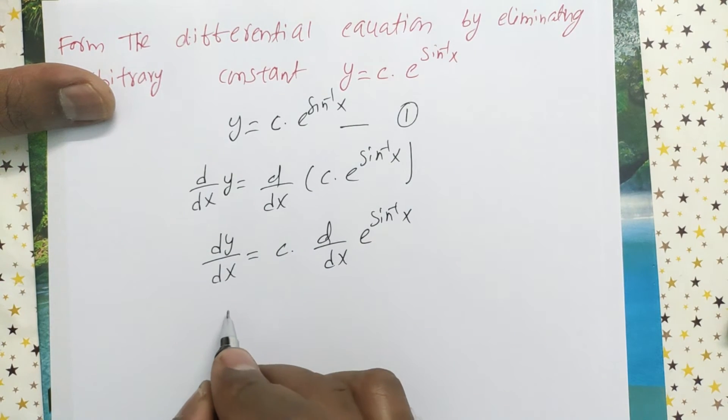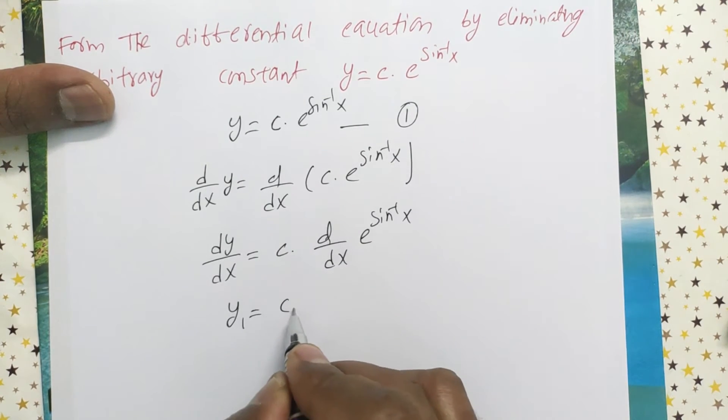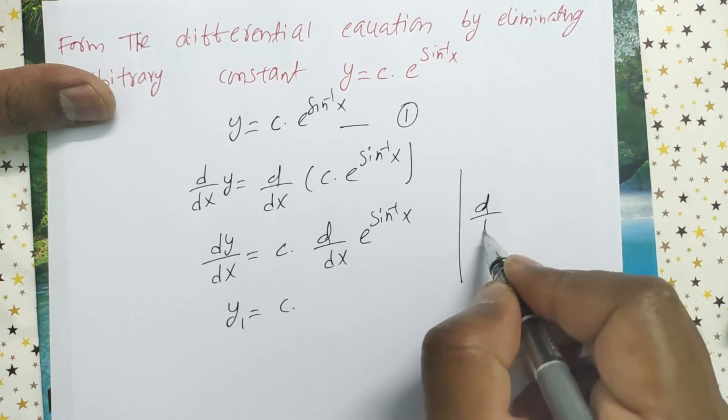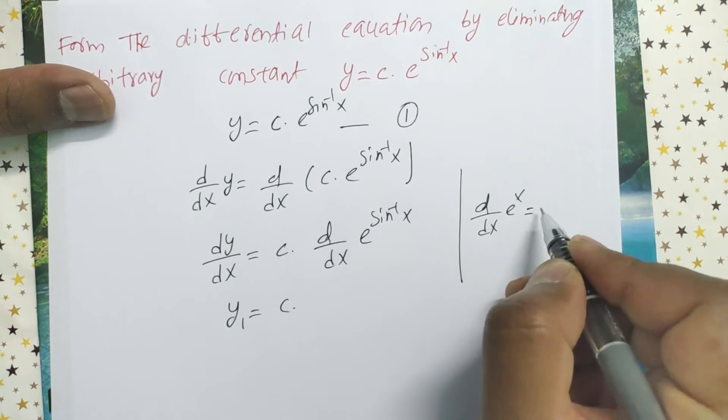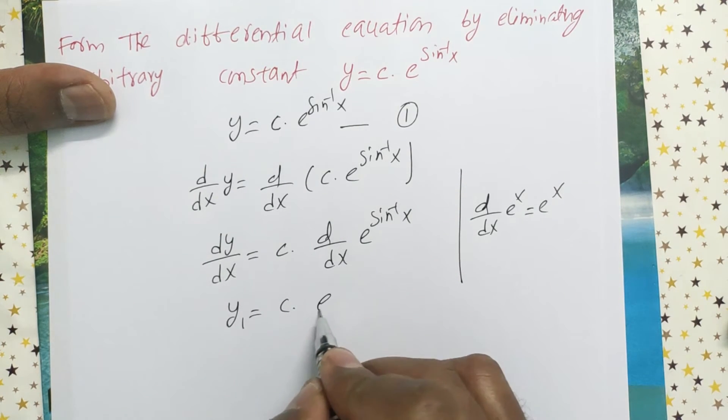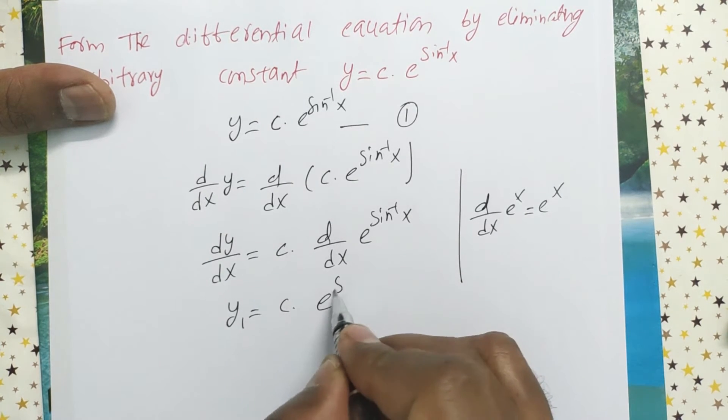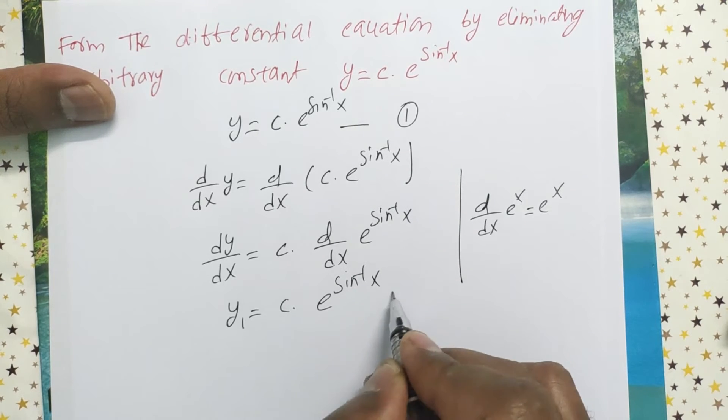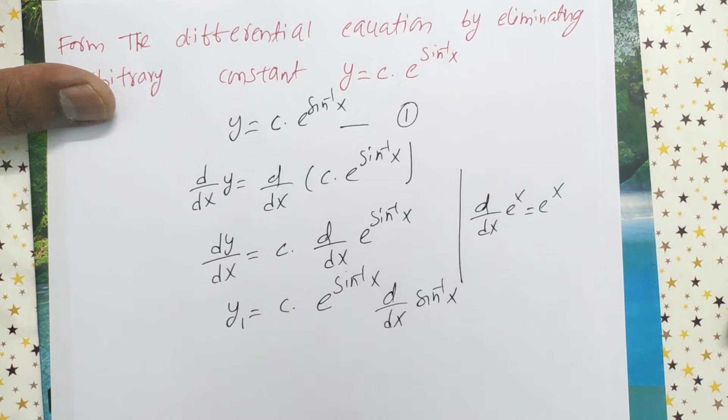Now dy by dx can be written as y1 equals c times d by dx of e to the power x. The derivative of e to the power x equals e to the power x only. Now here is e to the power sine inverse x times d by dx of what is the power here? Sine inverse x.